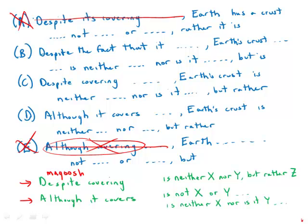Next, we'll look at the contrast. So is neither X nor Y, but rather Z. That is correct. And in fact, all three of these are in parallel. Something is neither X nor Y, but rather Z. They're in parallel.